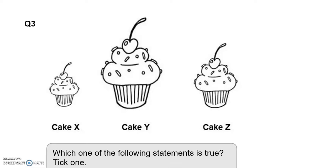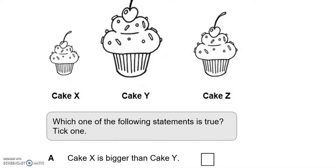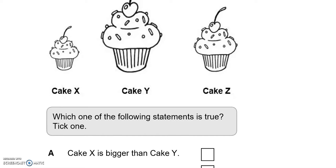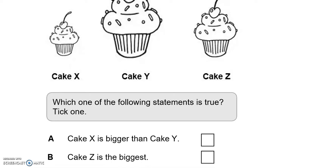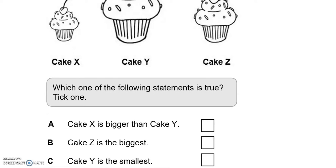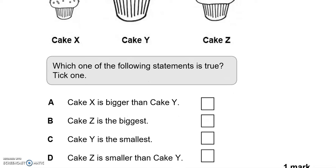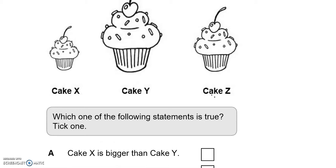We've got three cakes: cake X, cake Y, and cake Z. Which one of the following statements is true? Tick one. The first says cake X is bigger than cake Y — no, cake X is actually smaller, so we can't tick it. The second says cake Z is the biggest — that is not true, it's actually cake Y that is the biggest. The third says cake Y is the smallest — no, we've just said it's the biggest. Finally, cake Z is smaller than cake Y — looking at them, that is correct.